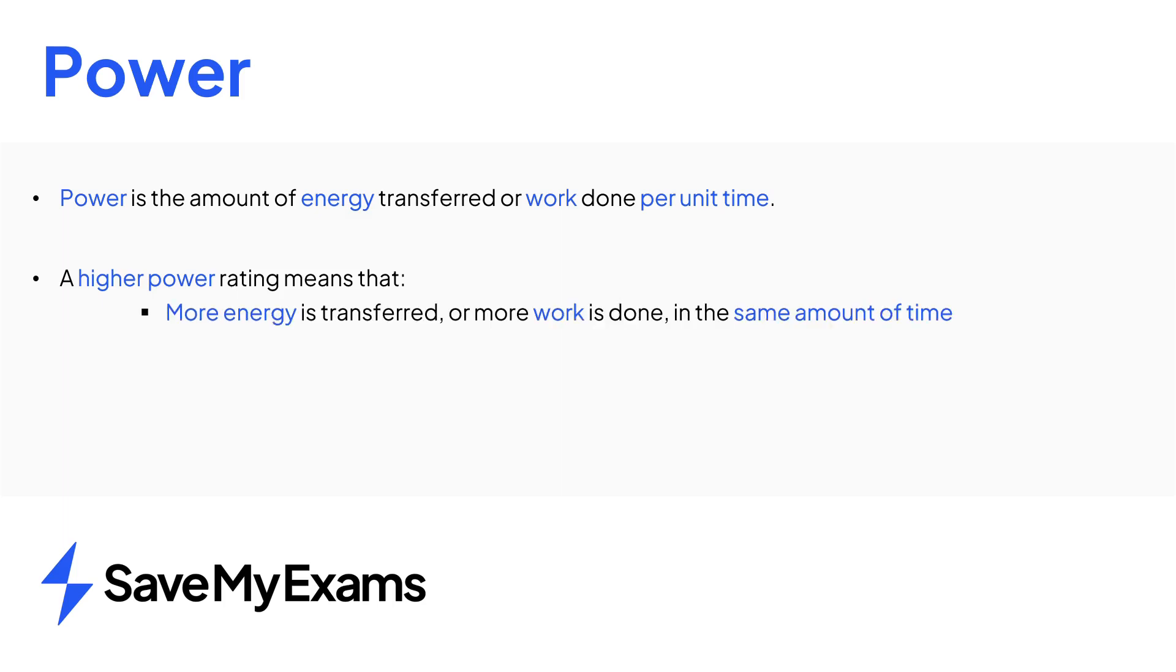In summary, power is the amount of energy transferred per unit time or the electrical or mechanical work done per unit time. A higher power rating means that more energy is transferred or more work is done in the same amount of time or that the same amount of energy is transferred or the same amount of work is done in a faster time.